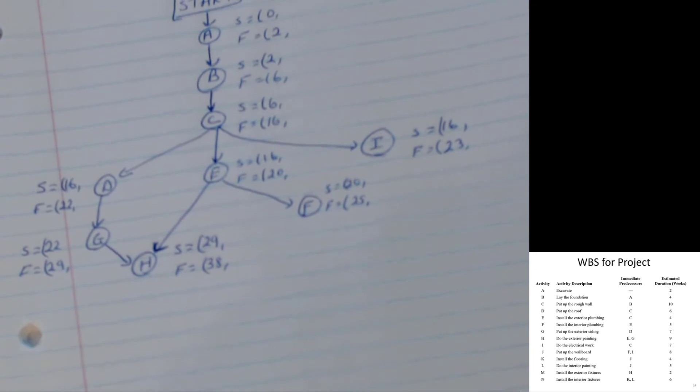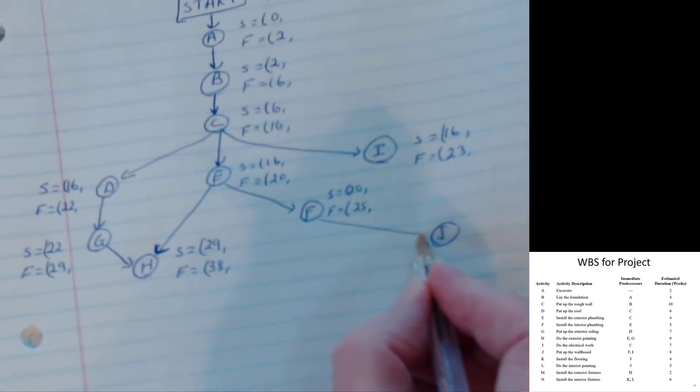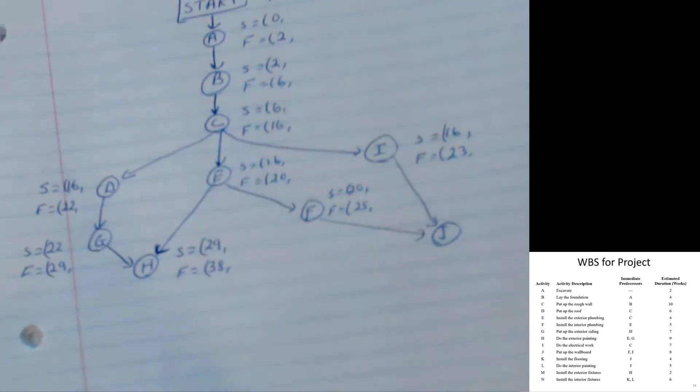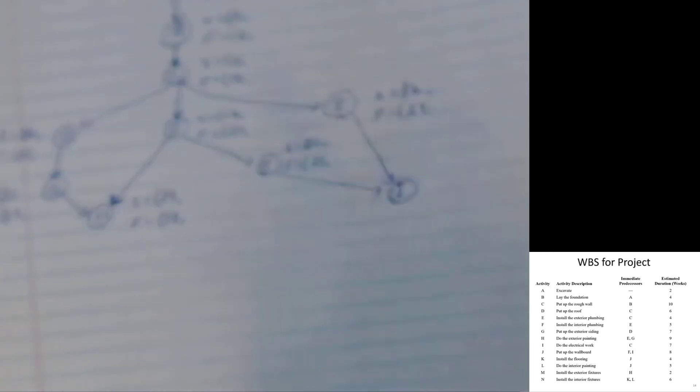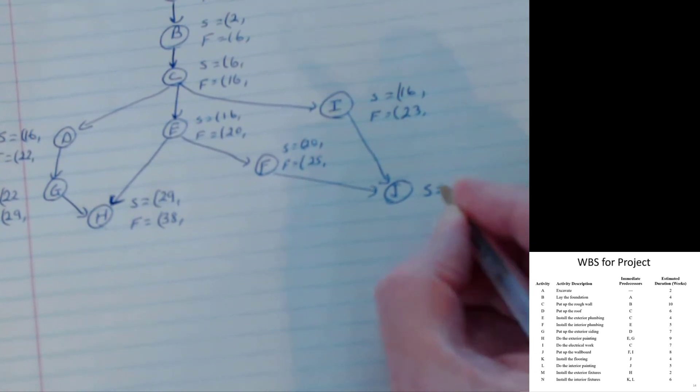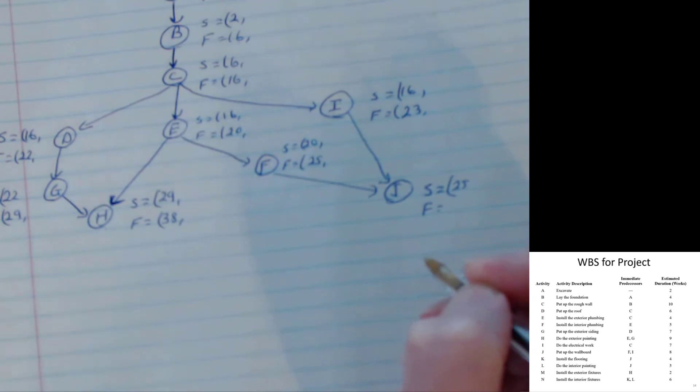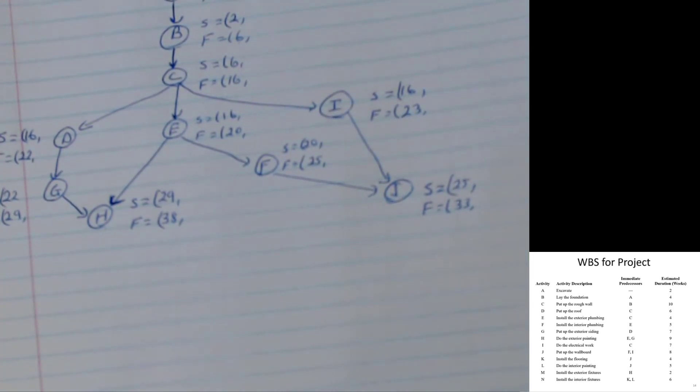J requires two activities to be completed, F and I. So let's write J out here. Requires F to be completed, requires I to be completed. So two predecessor activities. When can J begin? J can begin at the later of those two, which is period twenty-five. Finishes, how long does J take? J takes eight weeks. J can then finish eight weeks after period twenty-five, which is period thirty-three.